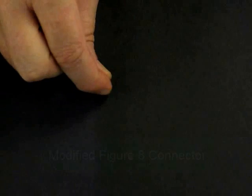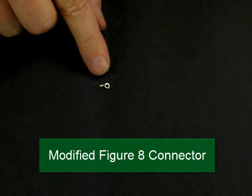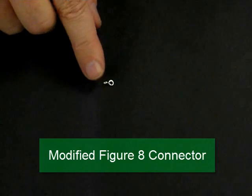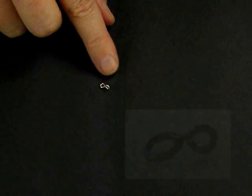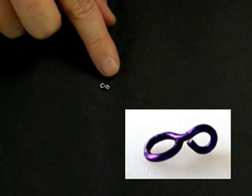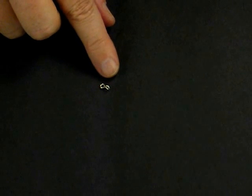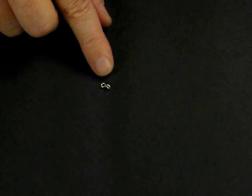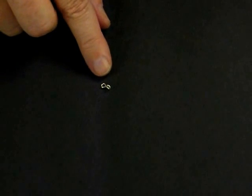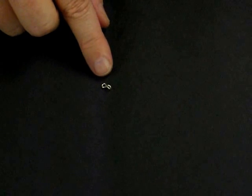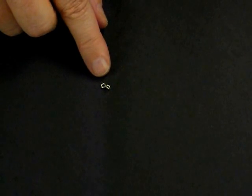And the last connector that we'll talk about is a modified figure eight connector. And this one's very small. But what this does is it does not change the orientation of the two components that you're connecting. So the regular figure eight connector changes the orientation. This does not change the orientation. It allows you to connect two components. And what it is is one loop at 90 degrees to another loop. And so that's our modified figure eight connector. And those are the jewelry making findings that we're going to discuss in this video. Thank you.